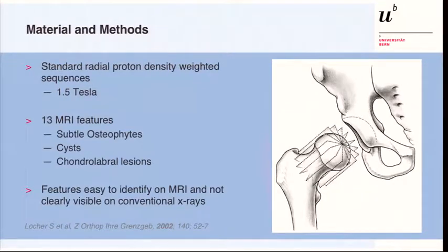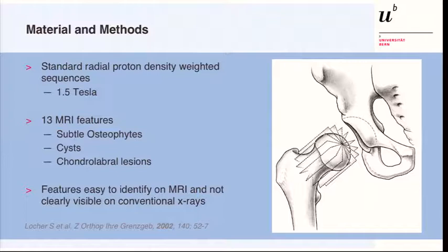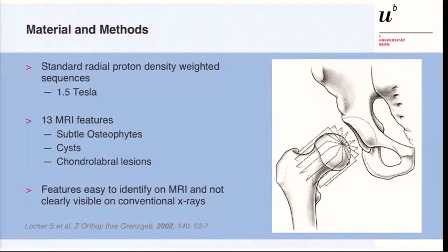We performed our standard radial MRI sequence using a 1.5 Tesla machine and analyzed 13 MRI features classified into three categories: osteophytes, cysts, and chondrolabral soft tissue lesions. We only included features that are clearly identifiable on MRI — not ambiguous findings — and these lesions are typically not clearly visible on conventional X-rays.